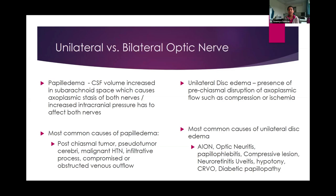Most common causes of papilledema include post-chiasmal tumor, pseudotumor cerebri, malignant hypertension, infiltrative process, and compromised or obstructive venous outflow. When you have unilateral disc edema — one optic nerve swollen — you have pre-chiasmal disruption of axoplasmic flow such as compression or ischemia. Common causes of unilateral disc edema include AION, optic neuritis, papilloflebitis, compressive lesions, neuroretinitis, uveitis, hypotony, central retinal vein occlusion, and diabetic papillopathy.